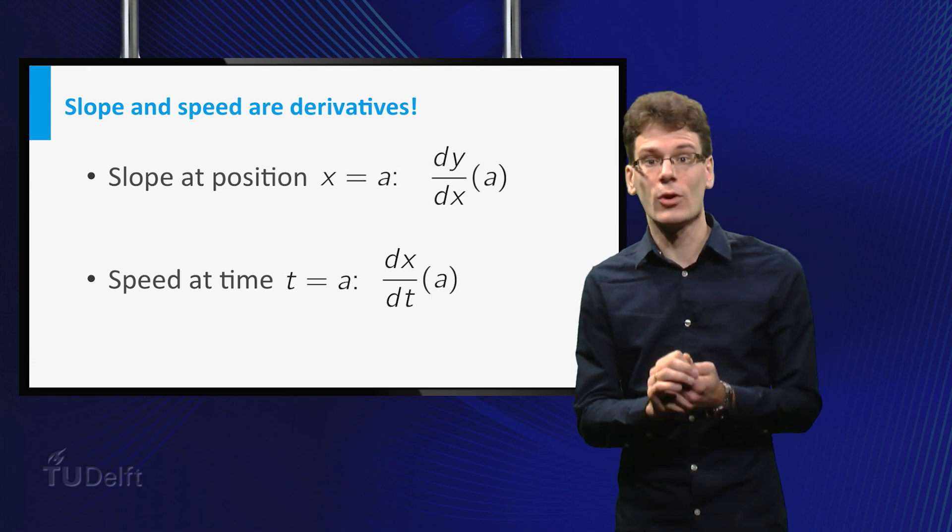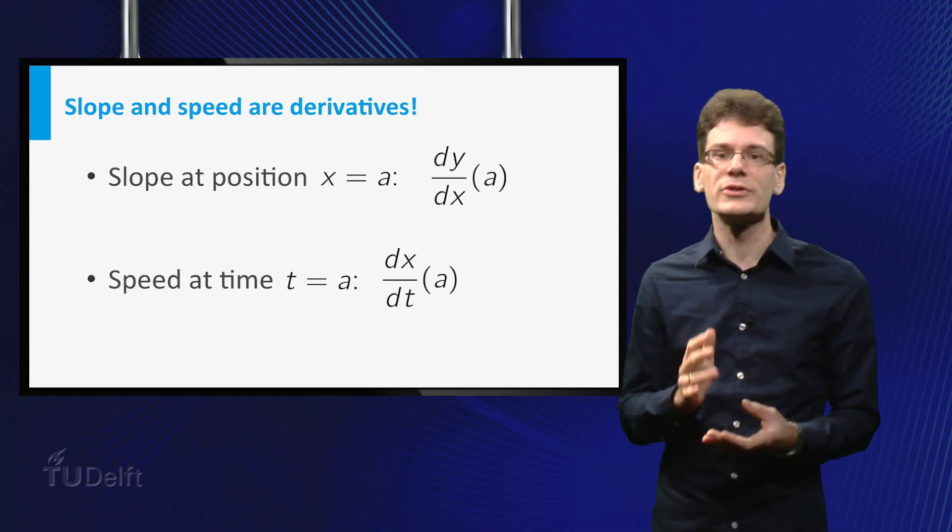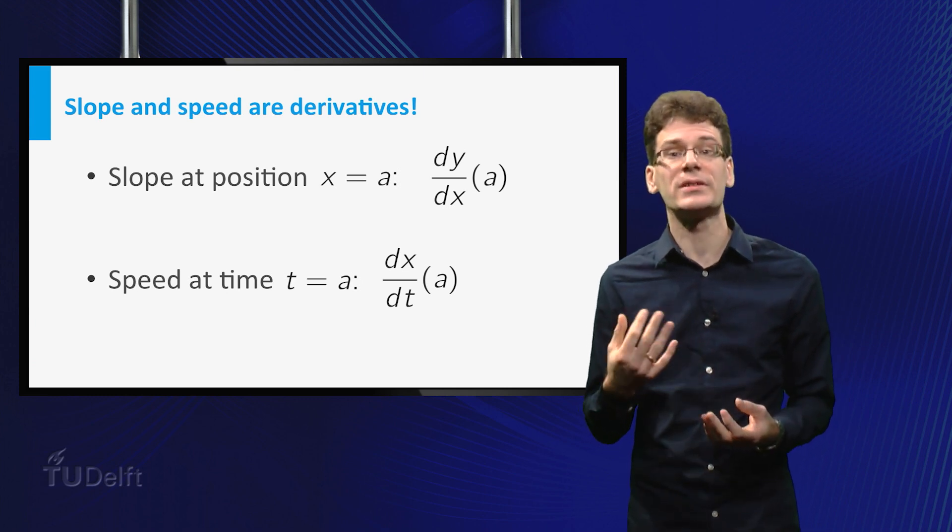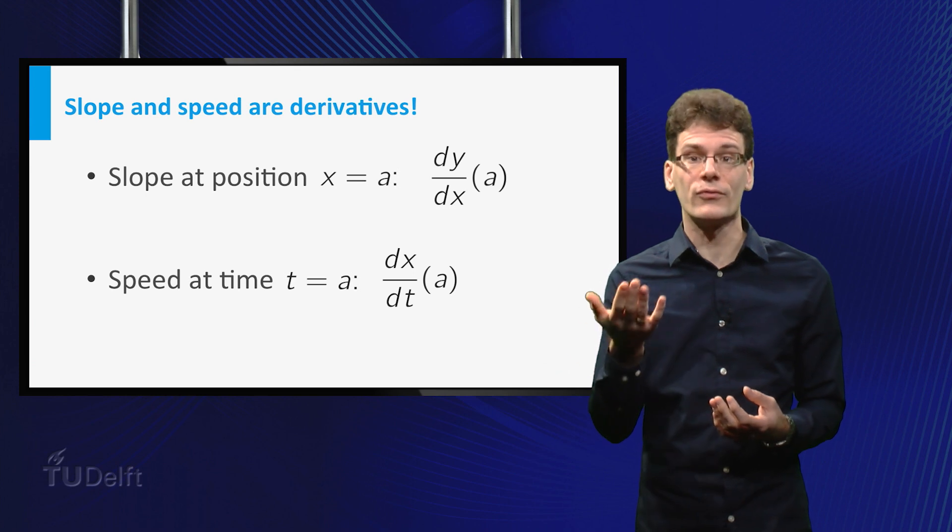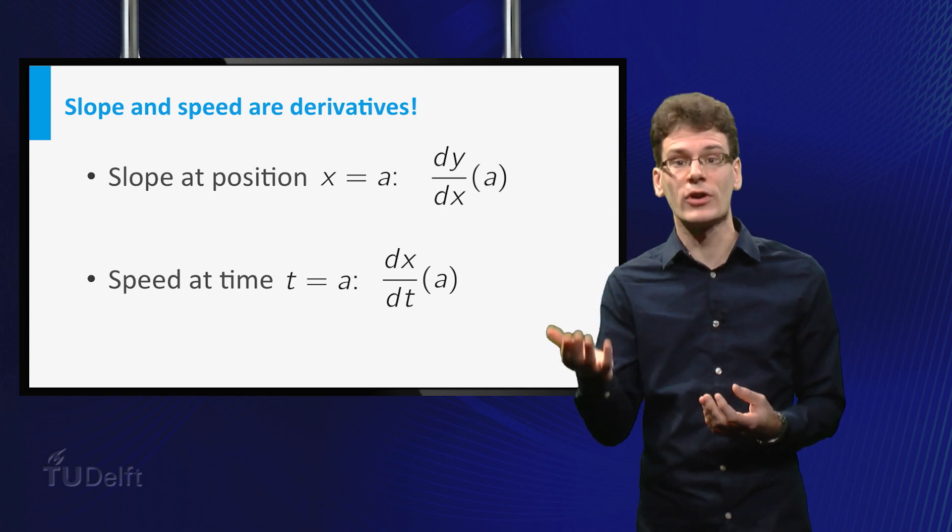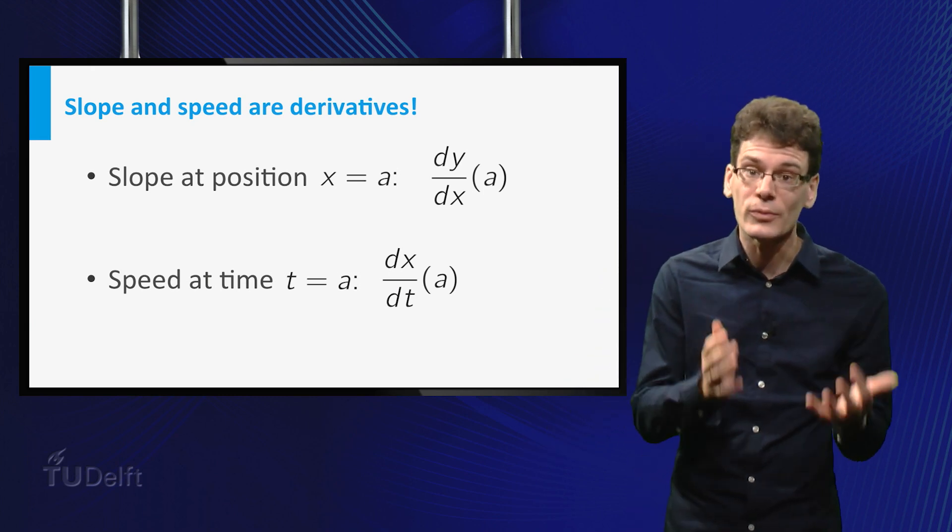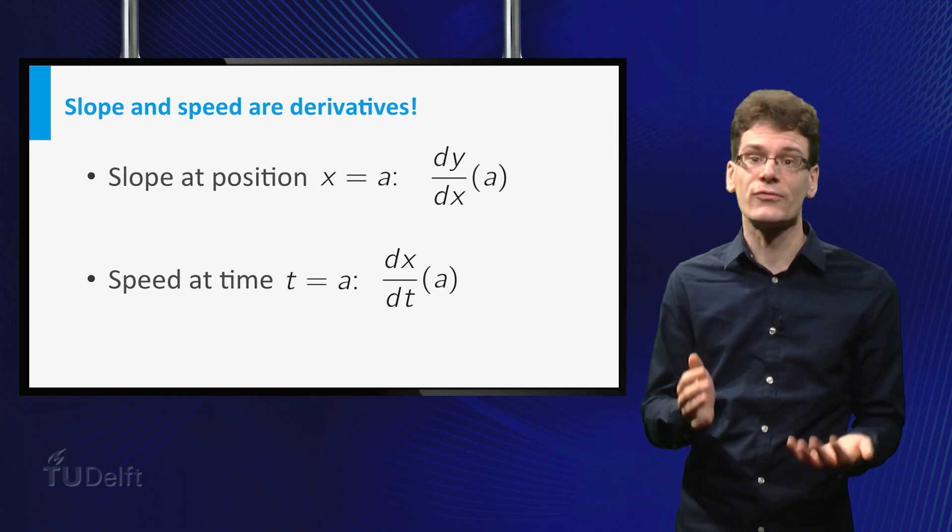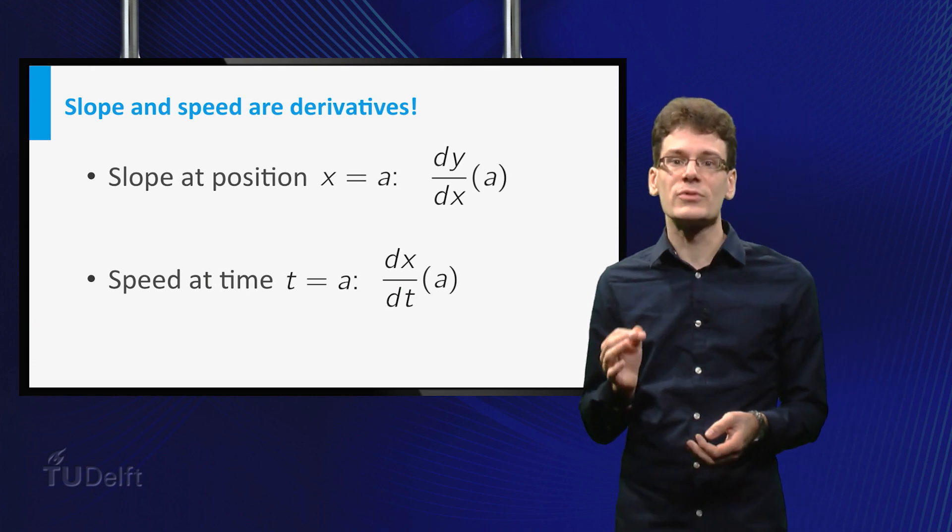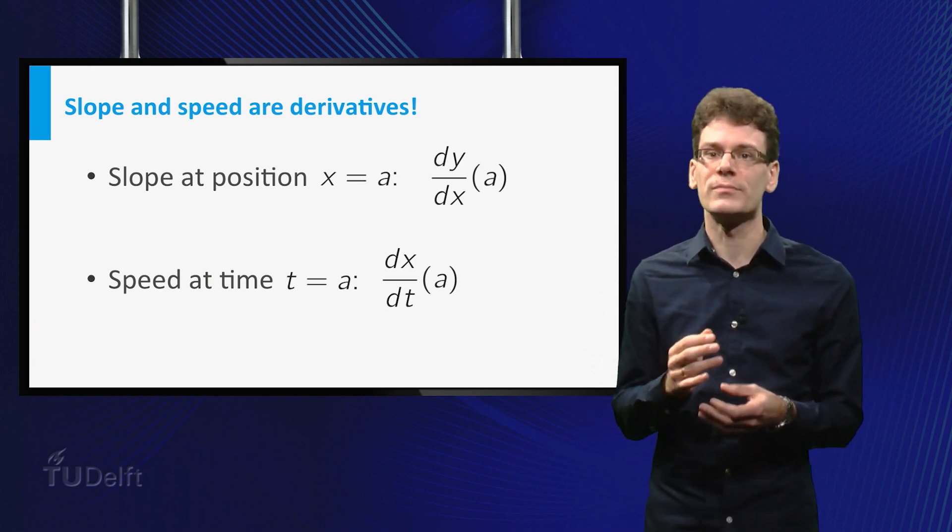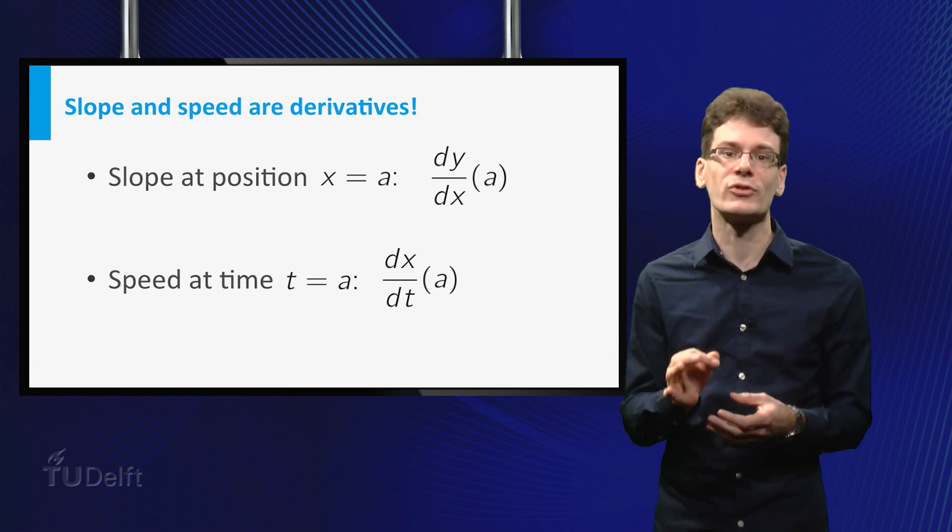Now let us return to the original questions. What is slope and what is speed? We have seen that both slope and speed can be interpreted as derivatives. Slope as the derivative of vertical position y as a function of horizontal position x. Speed as the derivative of position x as a function of time t. The definition in terms of the limit of a difference quotient may seem abstract, but it provides the basis for many measuring devices.